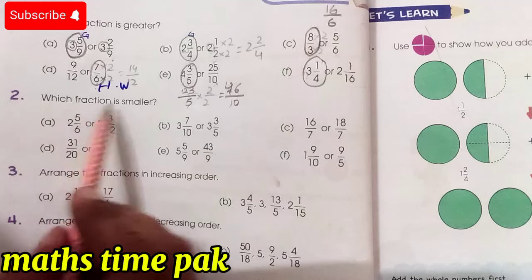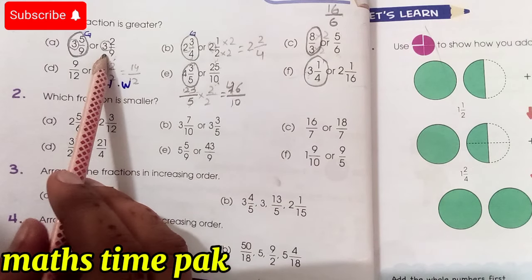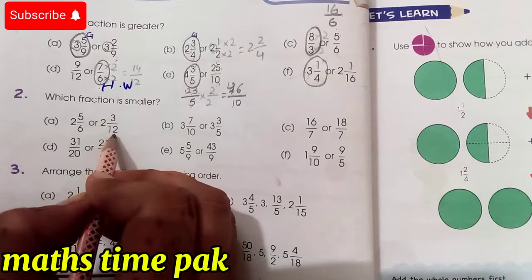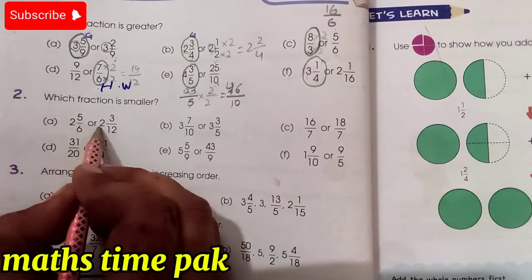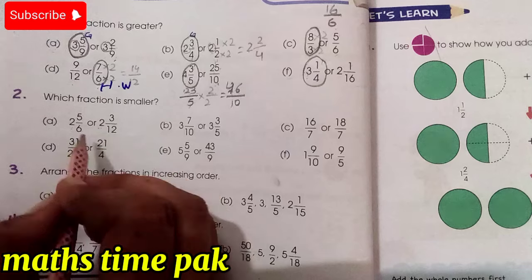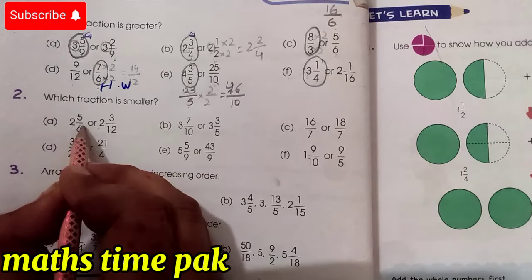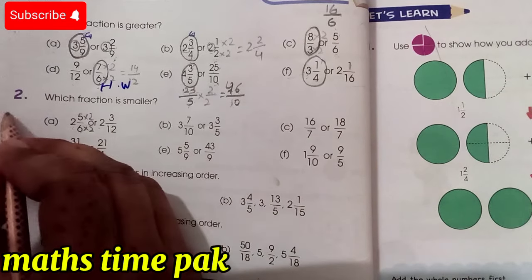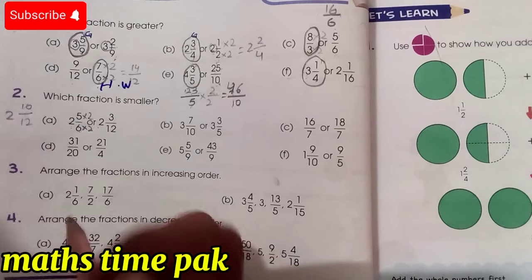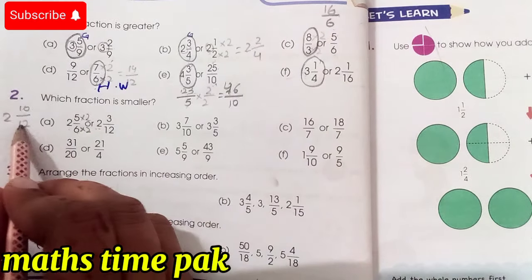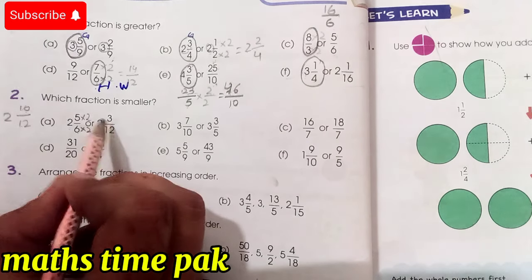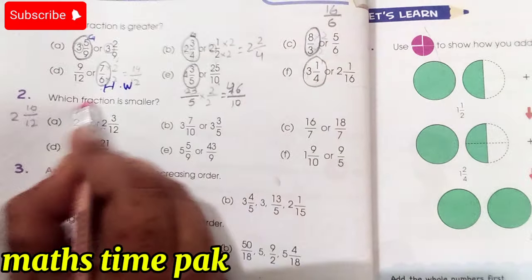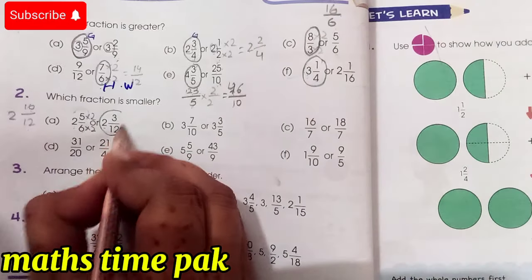Question number 2: which fraction is smaller? Using the same method. Part A has 2 5/6 and 2 3/12. Both whole numbers are 2. We match denominators: multiply 5/6 by 2/2 to get 10/12. Now comparing 10/12 and 3/12: 3 is smaller, so 2 3/12 is our smaller number.